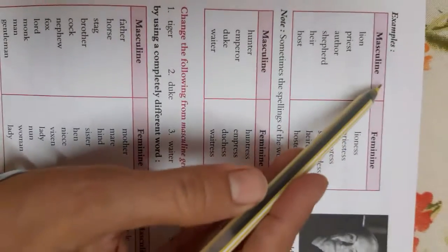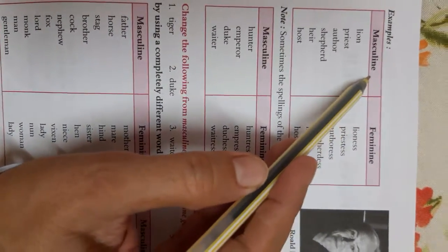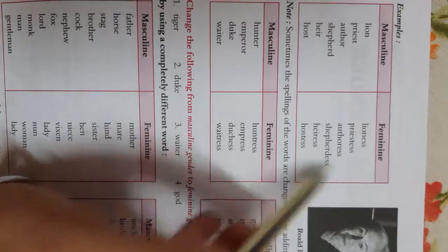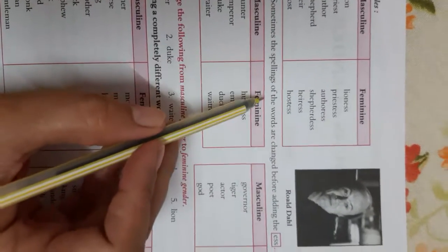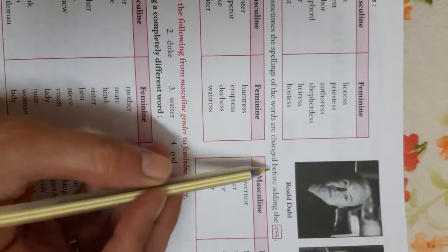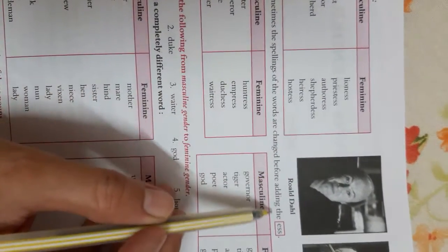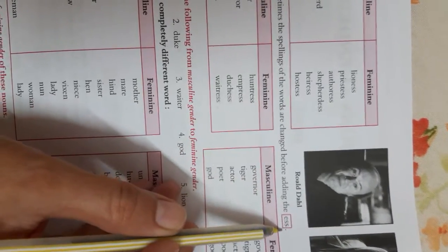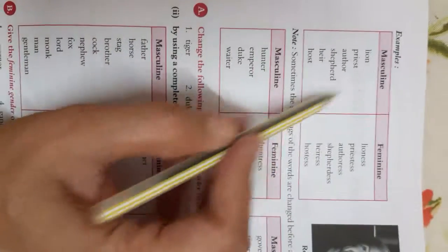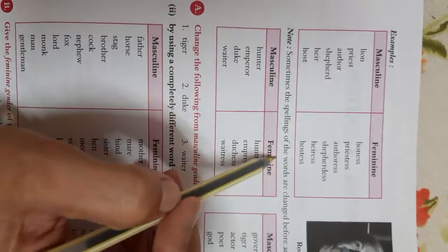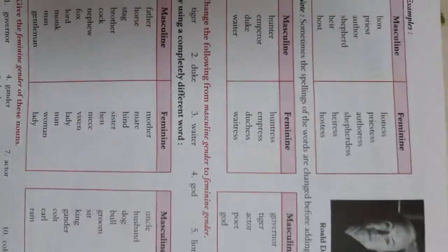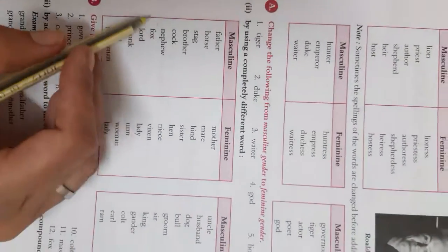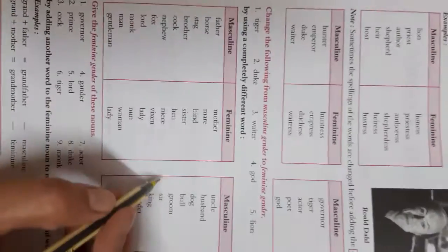Now these are the masculine forms and these are the feminine forms — so you have to learn these. Sometimes the spelling of the words is changed before adding '-ess'. These are the things that you need to learn properly with the spellings. Is it clear? Learn these properly.